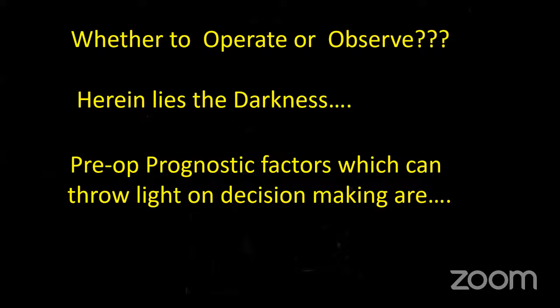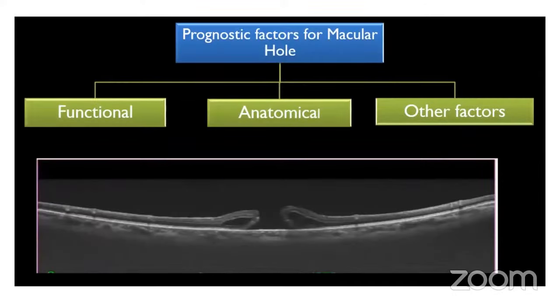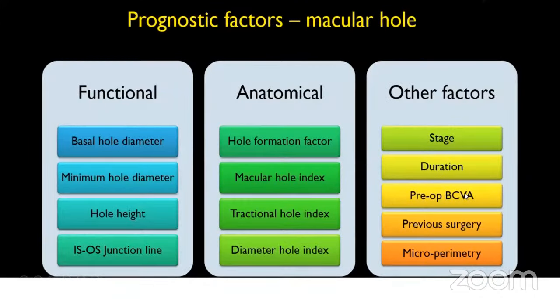Now the important question: whether to operate or observe a macular hole. Pre-operative prognostic factors can guide decision-making. These are divided into functional factors — basal hole diameter, minimal hole diameter, hole height, and IS/OS junction line; anatomical factors — the various macular hole indices (hole formation factor, macular hole index, tractional hole index, diameter hole index); and other factors — pre-operative staging, duration of macular hole, pre-operative best-corrected visual acuity, previous surgery, and micro-perimetry.